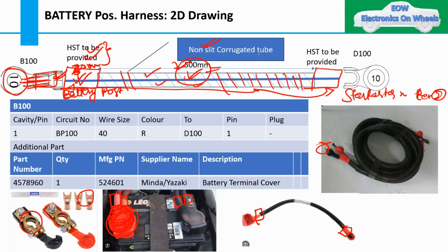This crossing is called non-slit corrugated tube. There are two types of corrugated tube - one is non-slit and the other is slit. Non-slit means it is not split - it is closed all around. You cannot take the wire out of it without cutting the entire corrugated tube. Non-slit means not open - it would be closed from all around.